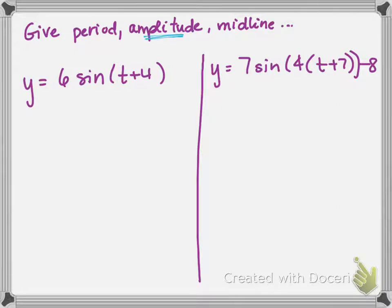So amplitude is going to come from the A value that gets multiplied out front. The midline is going to come from the K value that gets added or subtracted at the end, and the period is going to come from that B value.